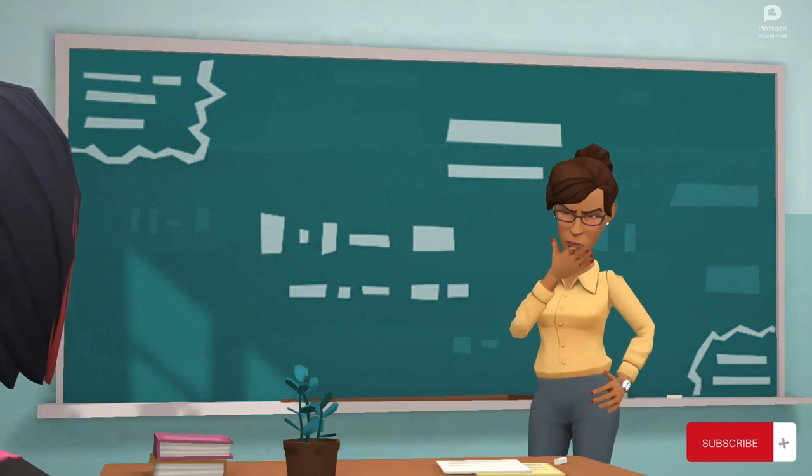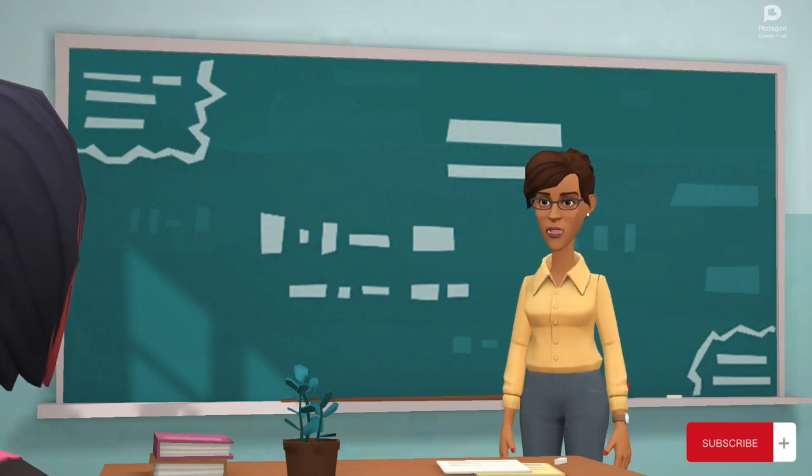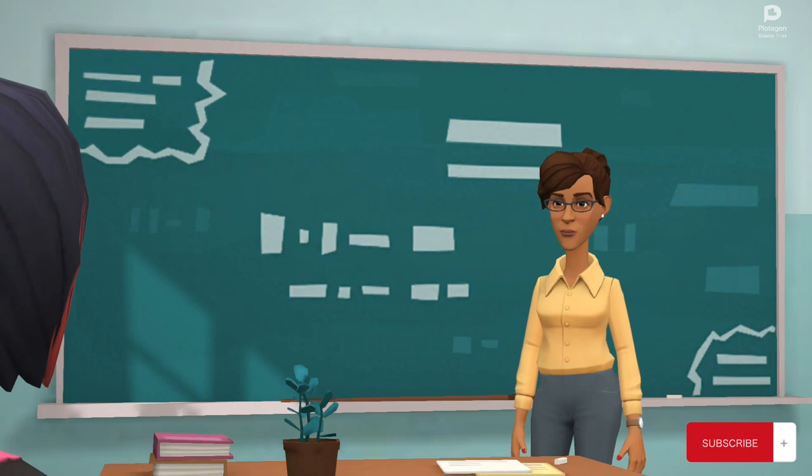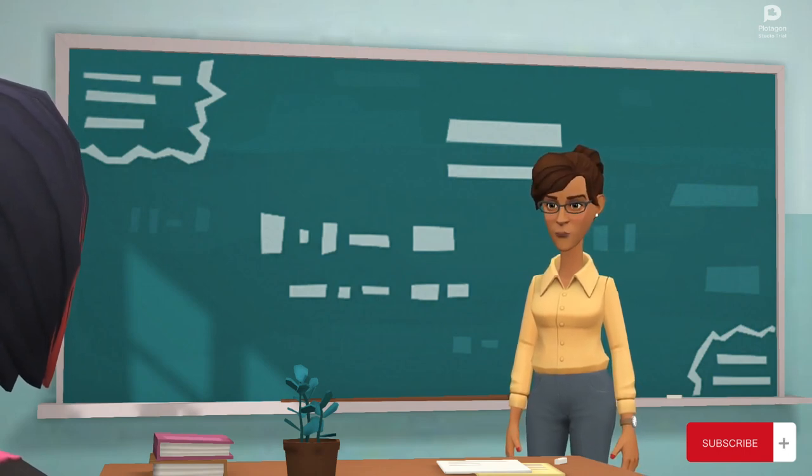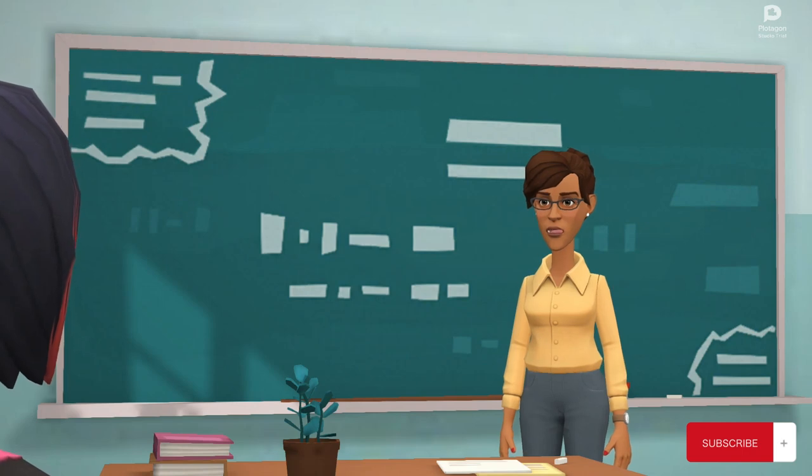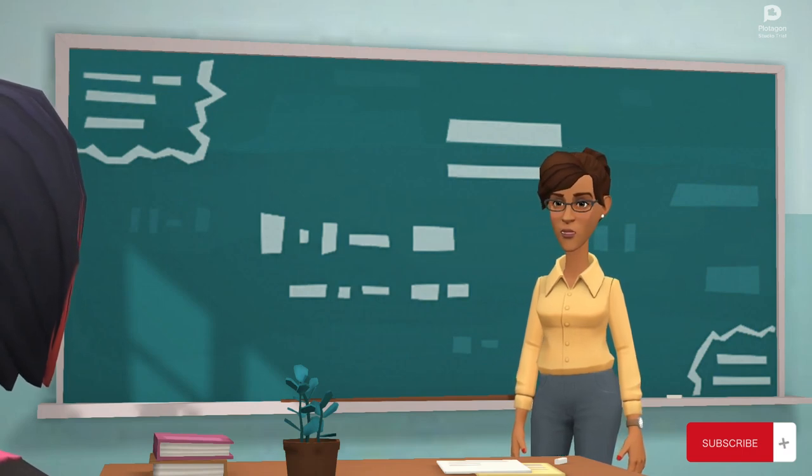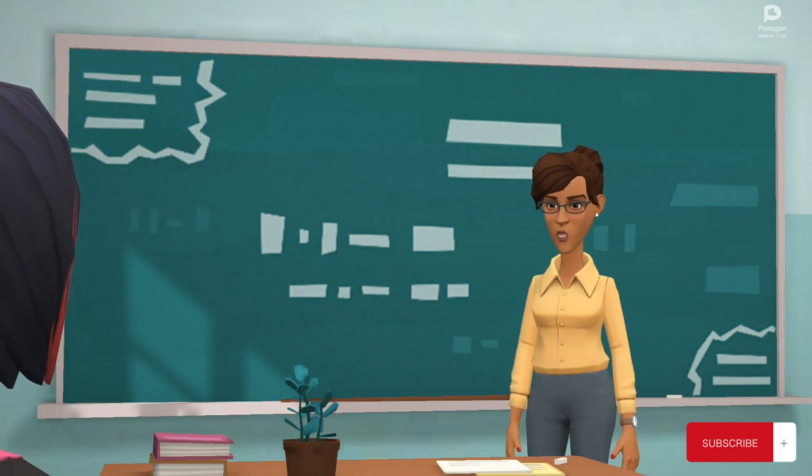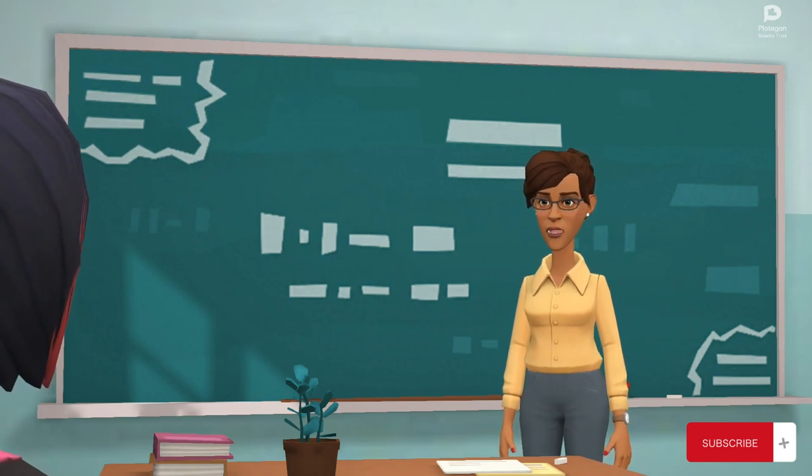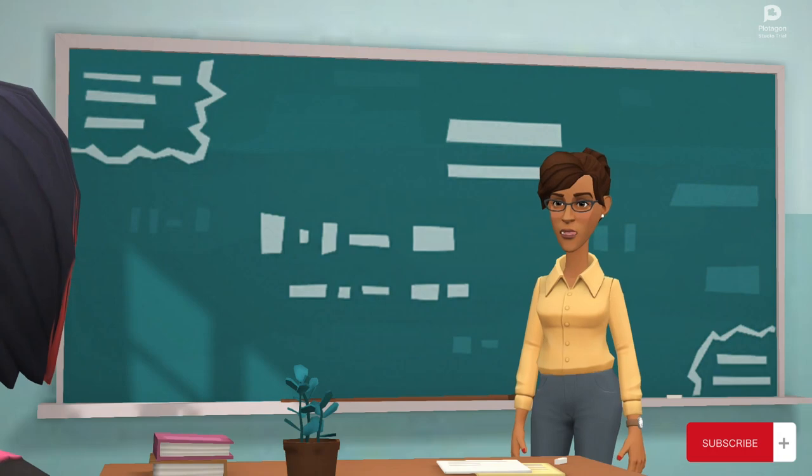Through this experiment, we have witnessed the power and limitations of our memory retention. While the first and last words were more easily recalled, the middle words posed a greater challenge for many of you. This phenomenon is known as the primacy and recency effects, which suggest that we tend to remember the first and last items in a sequence more effectively than those in the middle.